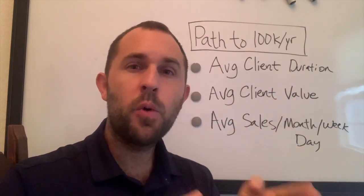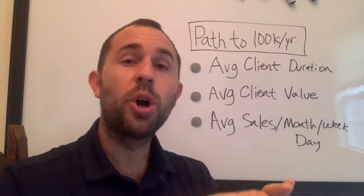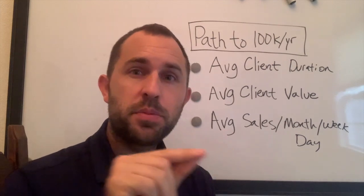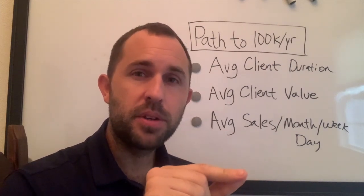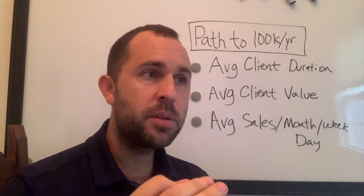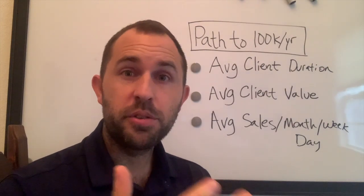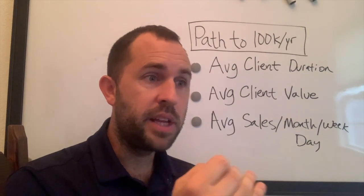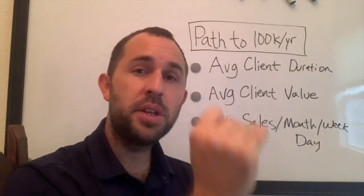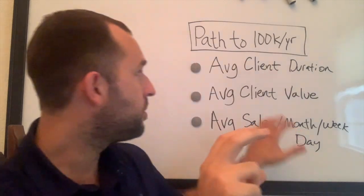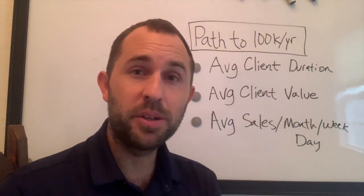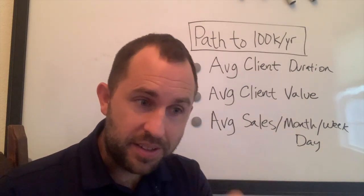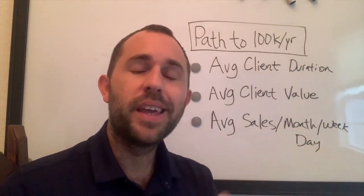The next metric is average client value — that means over the course of 12 months, how much did this client pay across the board? This gives you an average amount of what each customer pays. When you know that number, the math is there: if you want to make eight thousand three hundred thirty-three dollars per month — which is what you need to make a hundred thousand dollars per year — then you know how many clients you need based on your average client value.